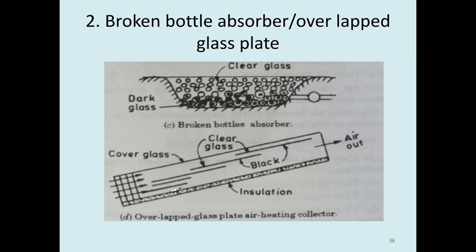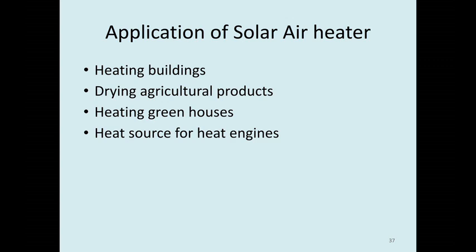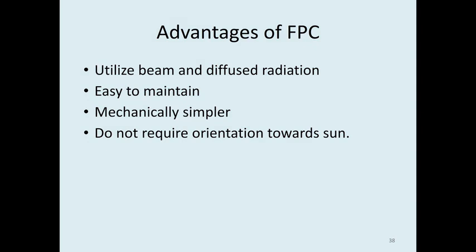Applications of solar air heater include: heating buildings, drying agricultural products, heating greenhouses, and as a heat source for heat engines. Greenhouses use glass enclosures to maintain a warmer temperature compared to atmospheric temperature, which is useful especially in winter conditions for plant growth. Advantages include the ability to utilize both beam and diffuse radiation, easy maintenance, mechanically simpler design, and no requirement for orientation towards the sun.